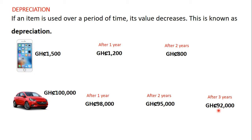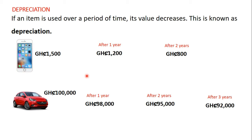As the years go on, the value of the item keeps on decreasing. This is what is referred to as depreciation — the reduction in the price of an item after it has been used over a period of time. Usually, the rate of depreciation is given as a percentage.